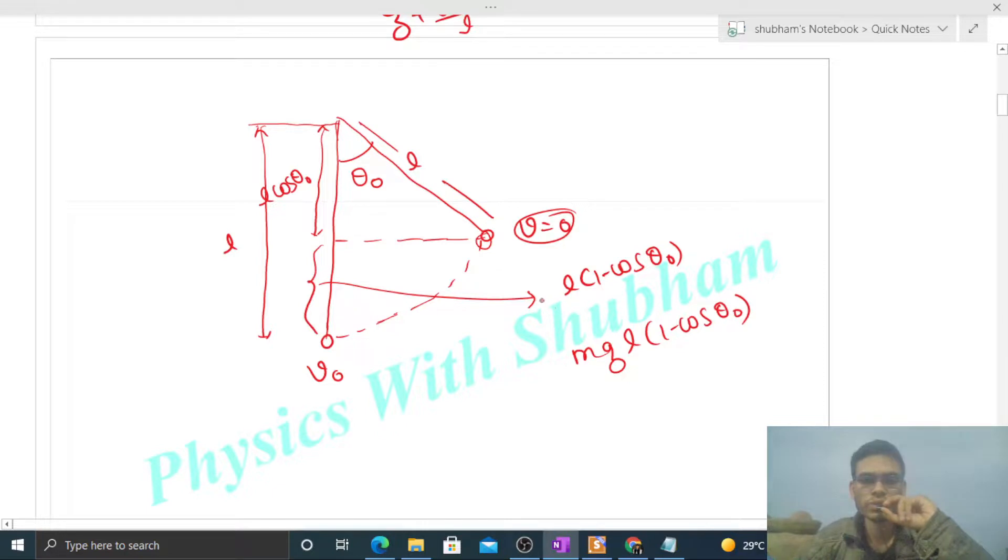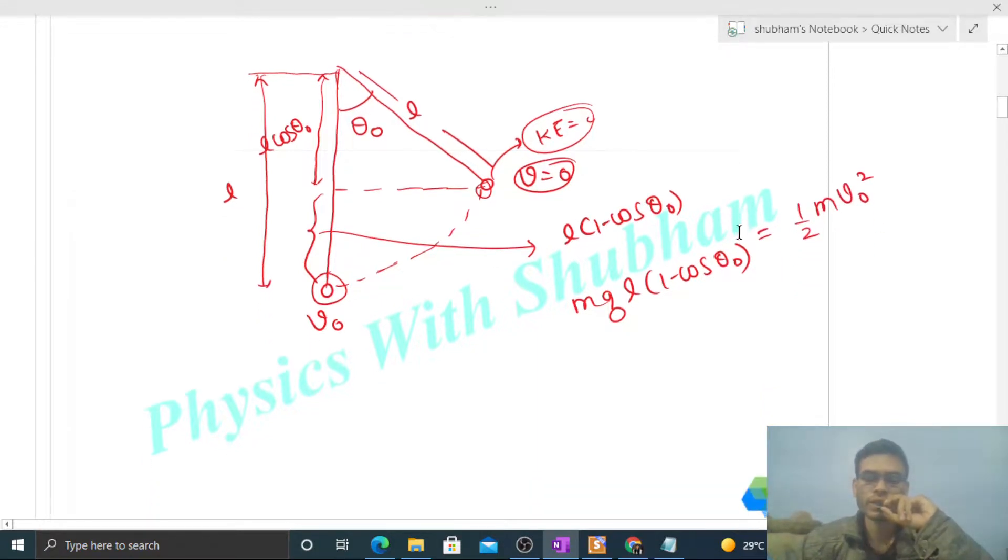So the decrease in potential energy equals the increase in kinetic energy. Here kinetic energy was zero. So the increase in kinetic energy is half of M into v naught square. So we can equate these.